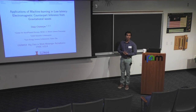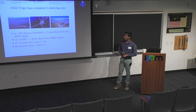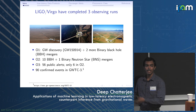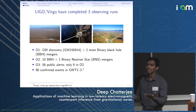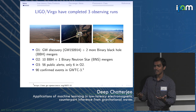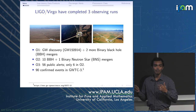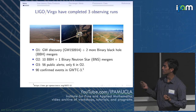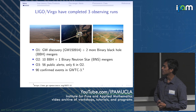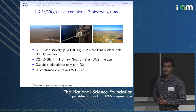Applications of machine learning in low-latency electromagnetic counterpart inference from gravitational waves. As many of you may know, the ground-based gravitational detectors — the LIGO detectors at Hanford and Livingston, and Virgo — have completed three observing runs as of today.